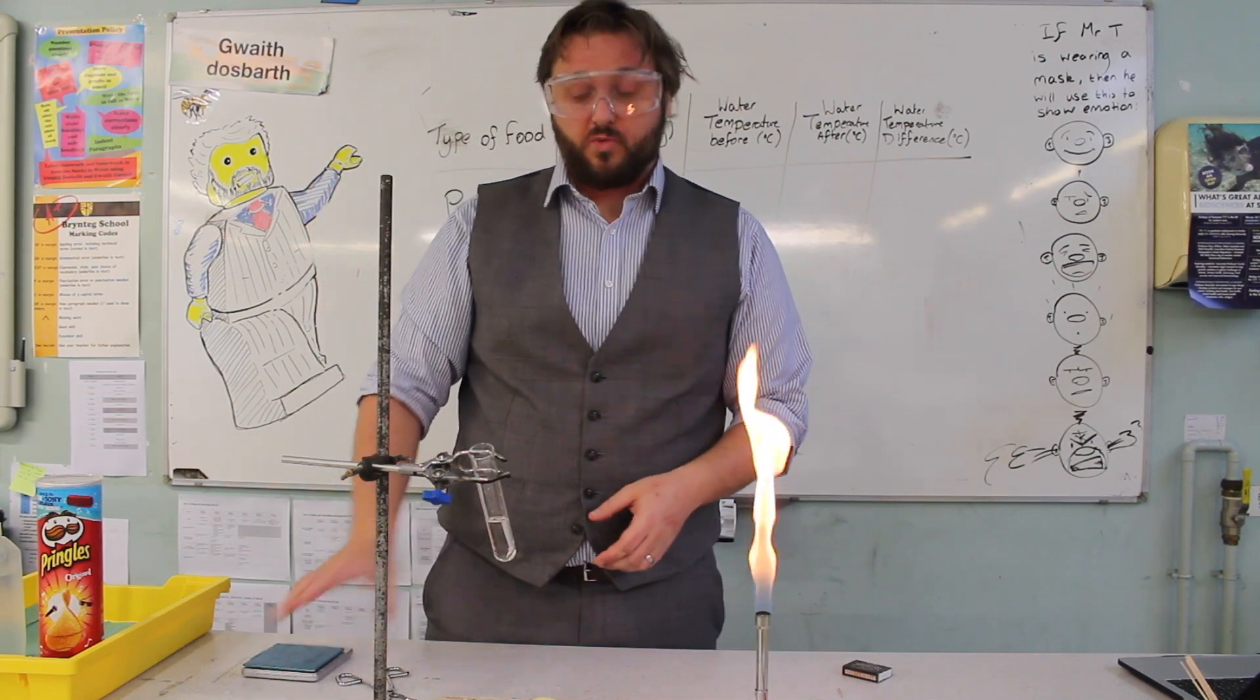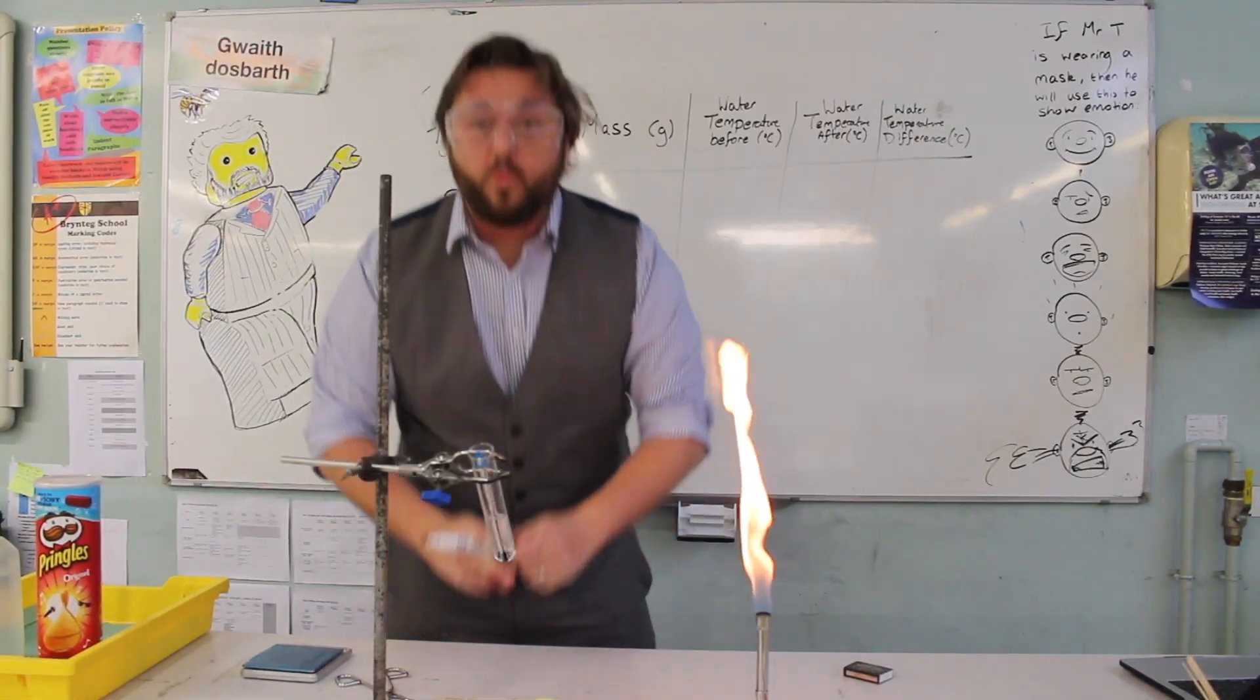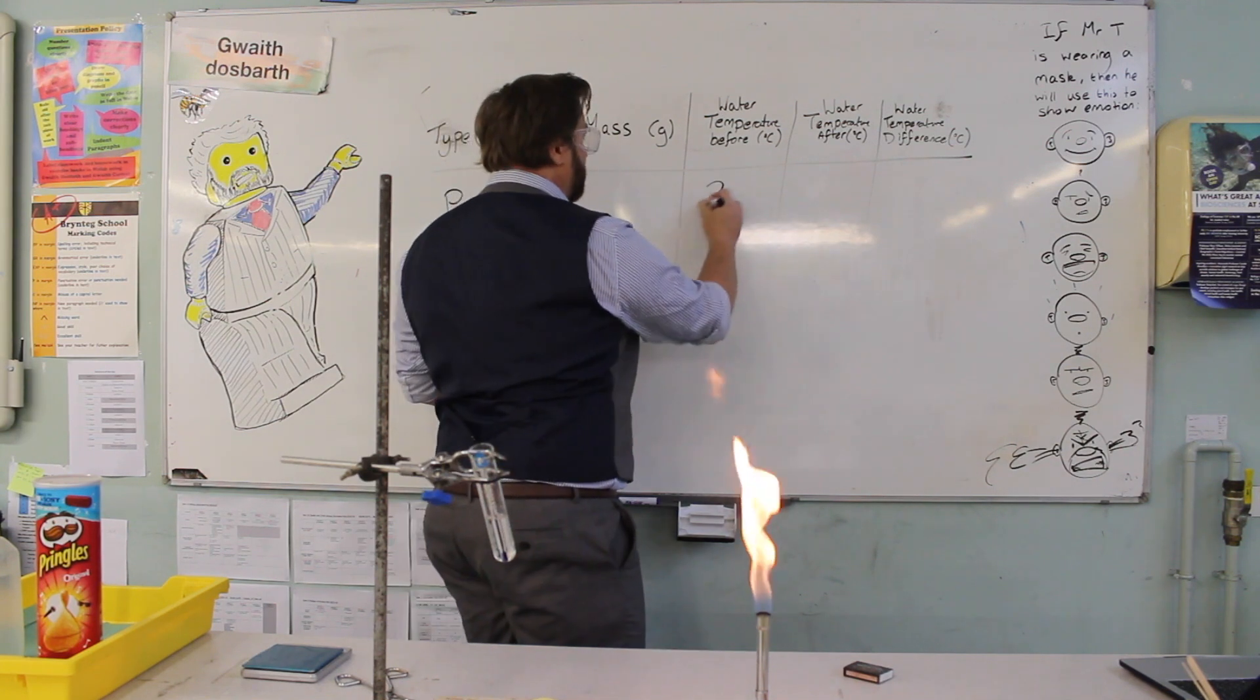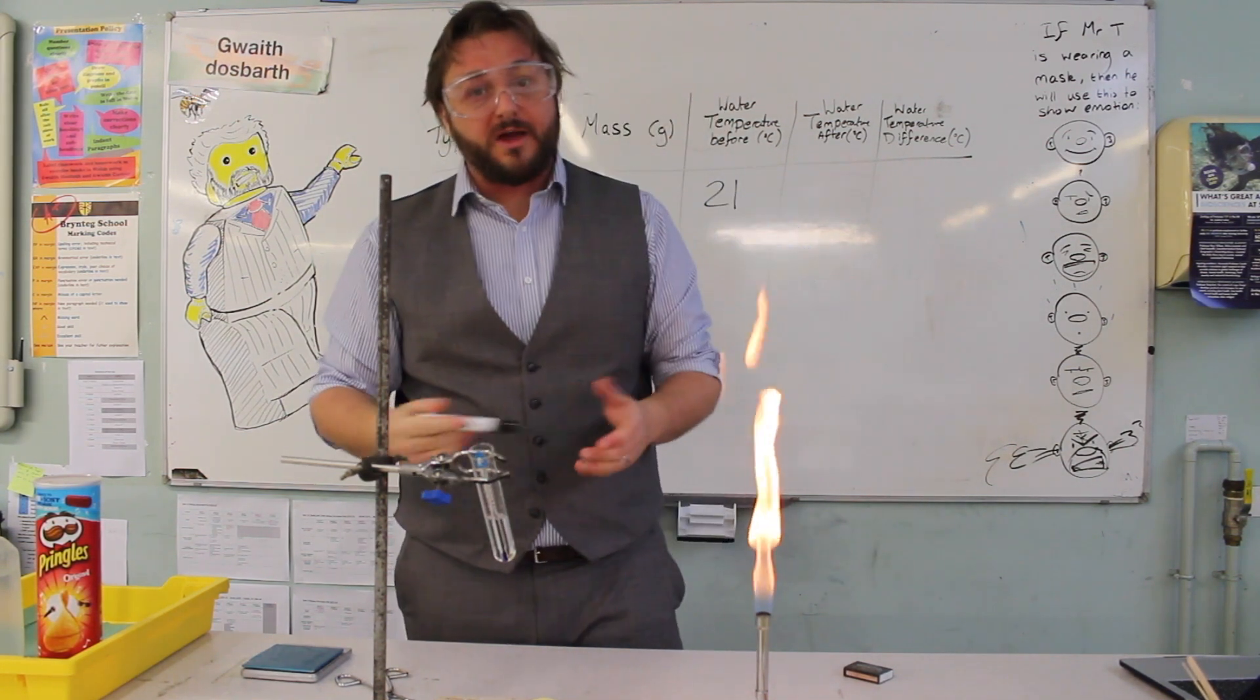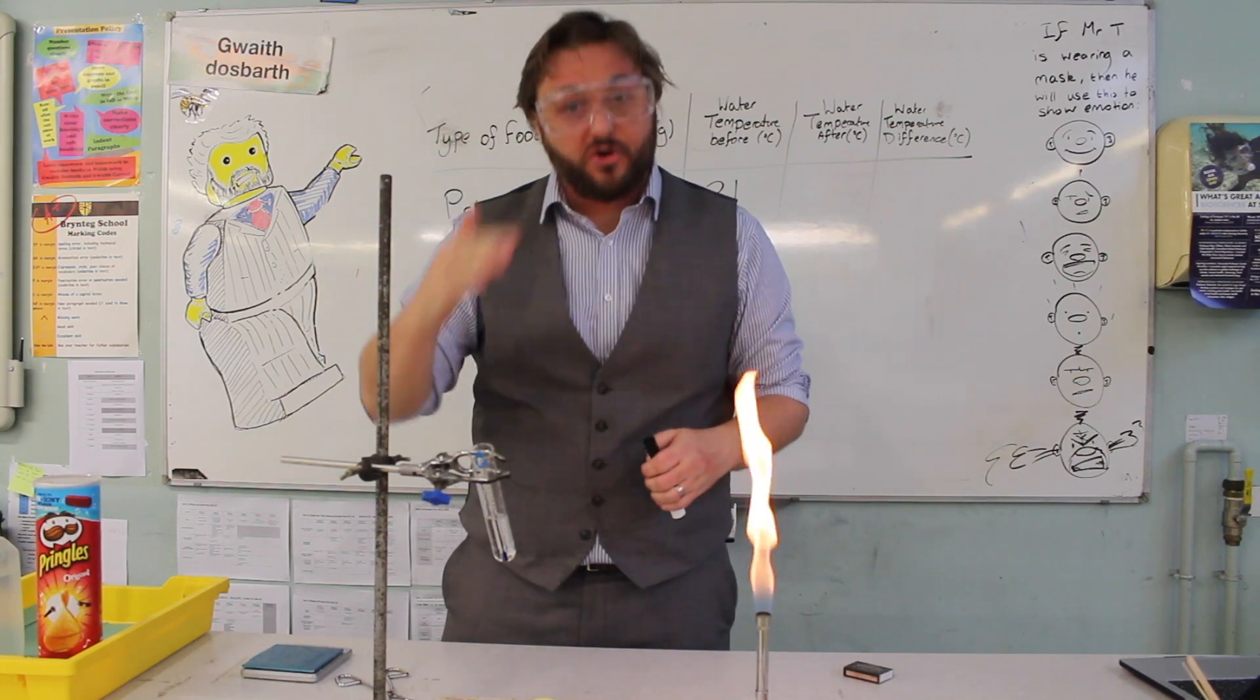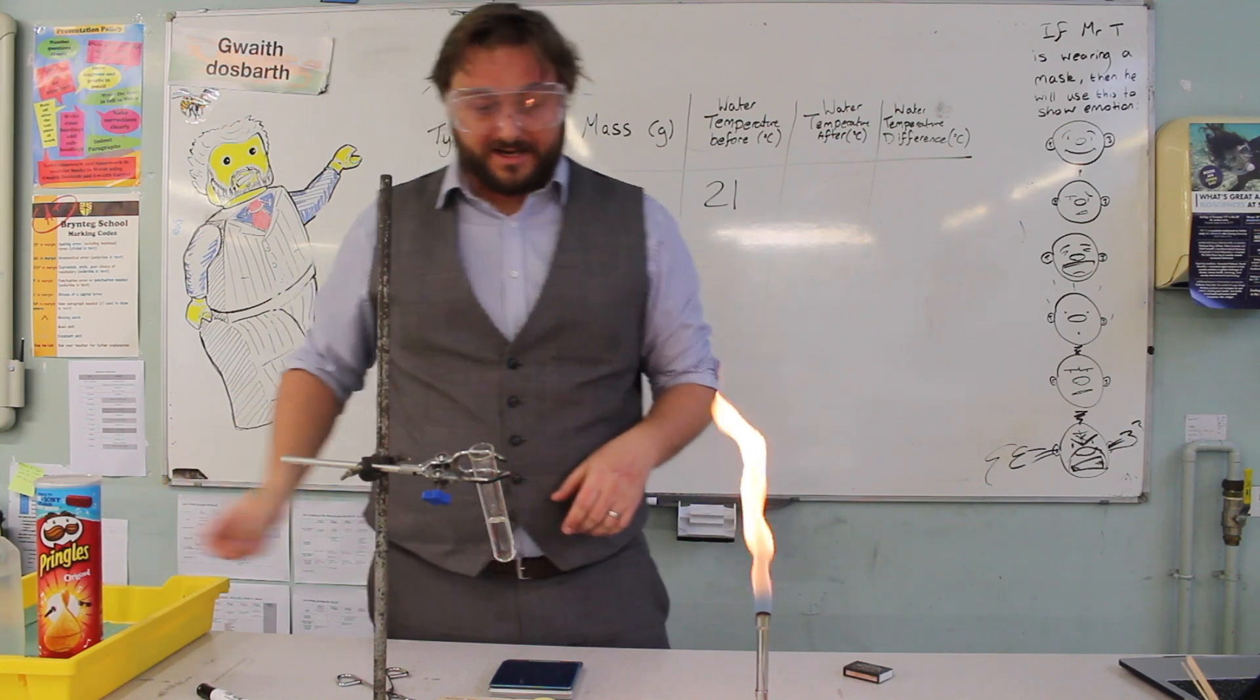Once we've sorted our water, there's a few measurements we're going to need to take. The first is the temperature of the water. So our water is starting off at 21 degrees centigrade. It's important to know that because we are ultimately measuring the increase in the temperature of the water. We're going to take our thermometer out, we'll put it back in later.